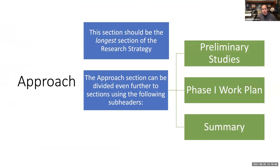Then the approach section — this is the section that needs to be the longest, generally four pages or more, and it's critically important. This is the number one area where reviewers score poorly because people don't provide enough detail. You really, really need to think about lots and lots of detail here — this should be incredibly detailed. I typically organize this section with the following subheaders: first, preliminary studies; then the phase one work plan; and then a summary section.